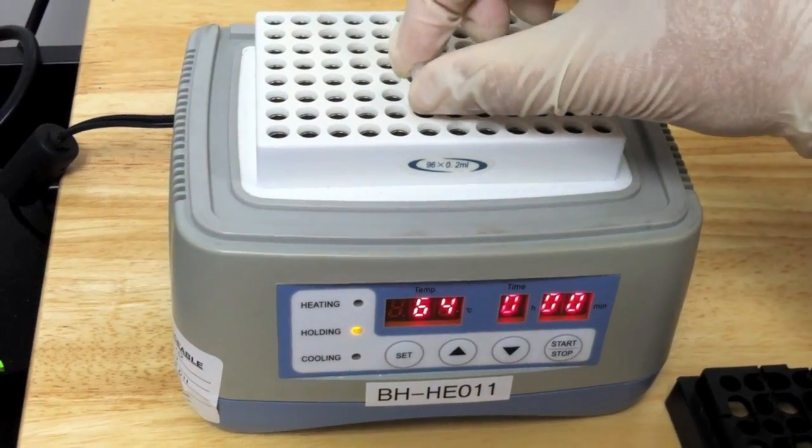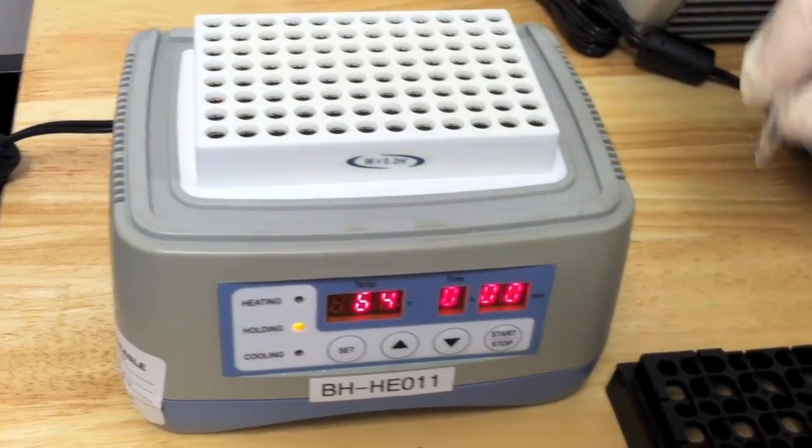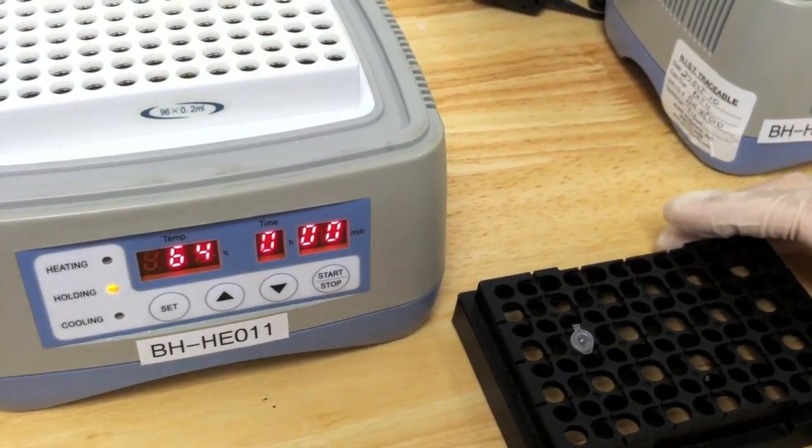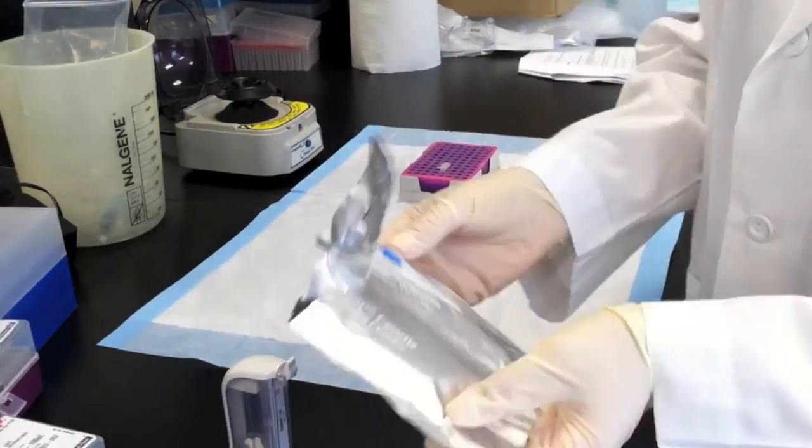Remove the reaction tube from 64 degrees Celsius after 60 minutes. Place the tube in a rack at room temperature. Tear open a new cassette package.